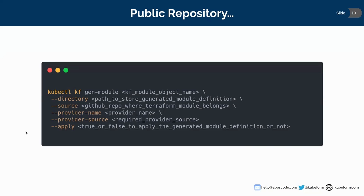So this is for the public repository. This is the command you can use for generating any QFIRM module definition from any Terraform module in your public repository.